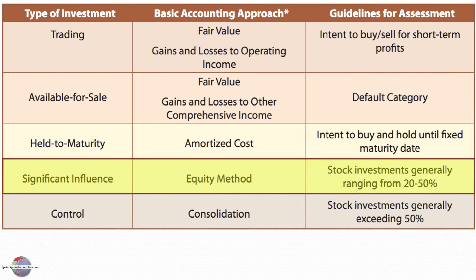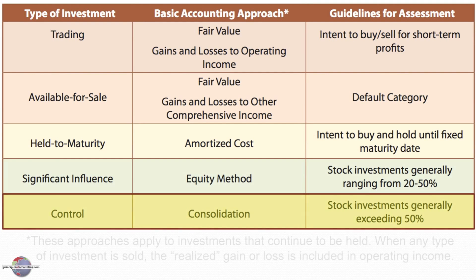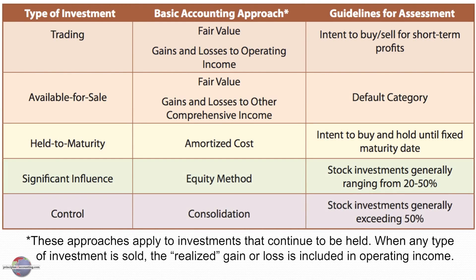Lastly, if we buy the stock of another company with the intent of controlling them, we'll consolidate that scenario. These approaches apply to investments that continue to be held. When any type of investment is sold, the realized gain or loss is then measured and included in operating income, so these accounting methods are overridden at the point of sale. Any gain or loss is reported in income when the investment is actually sold.